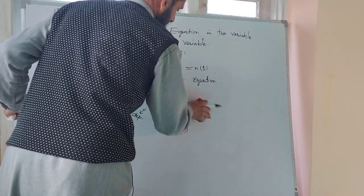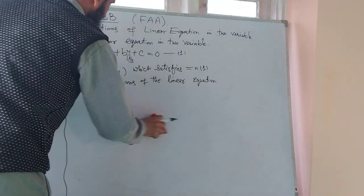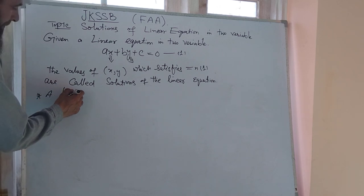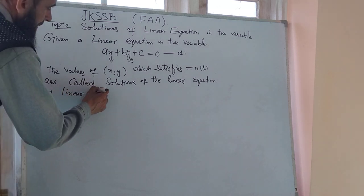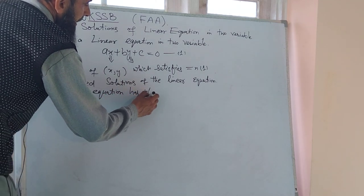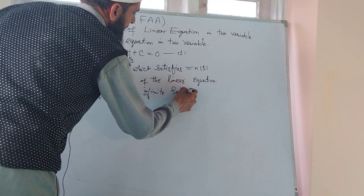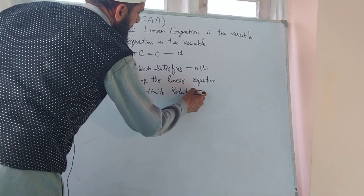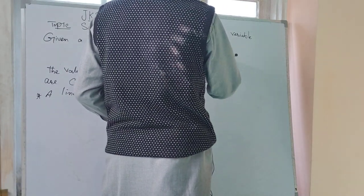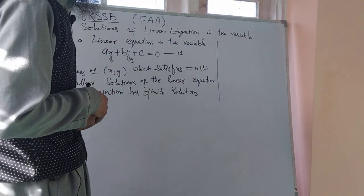Now, take note of important points. The first important point is that a linear equation in two variables has infinitely many solutions. Remember this point. We will now look at particular solutions for this linear equation.